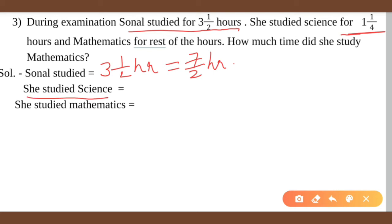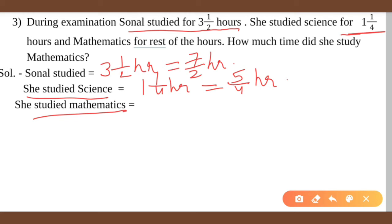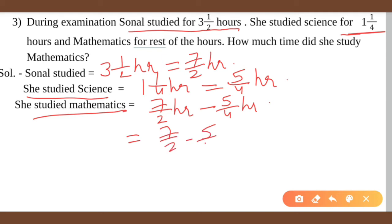She studied science for 1 and 1 by 4 hours out of total 3 and a half hours. So how long did she study mathematics? Total is 7 by 2 hours, and we subtract the science time of 5 by 4 hours. So we calculate 7 by 2 minus 5 by 4. LCM of 2 and 4 is 4.